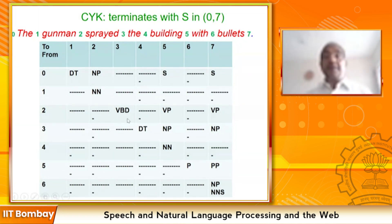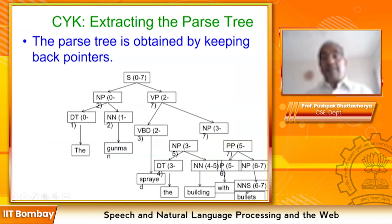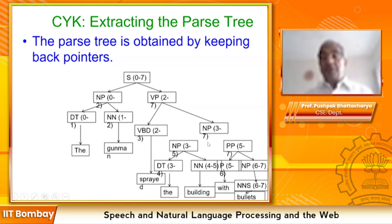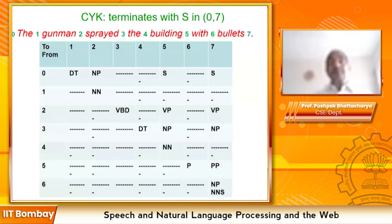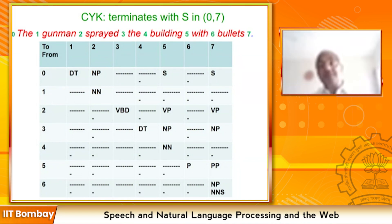The whole parse tree is contained in this table and can be recovered by following back pointers. S goes to NP VP; NP goes to DT and NN — DT is 'the', NN is 'gunman'; VP goes to VBD NP; VBD is 'sprayed'; NP goes to NP PP; with 'the building with bullets' as the structure under this NP. CYK parsing is one of the most elegant algorithms in all of computer science — a beautiful parsing algorithm.